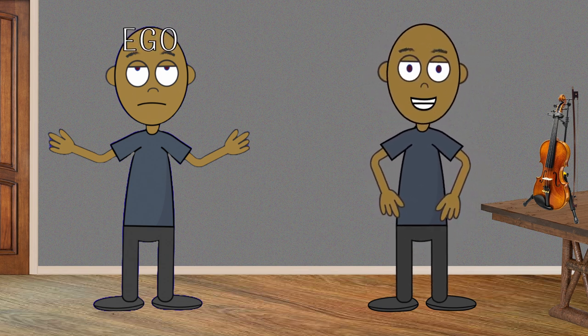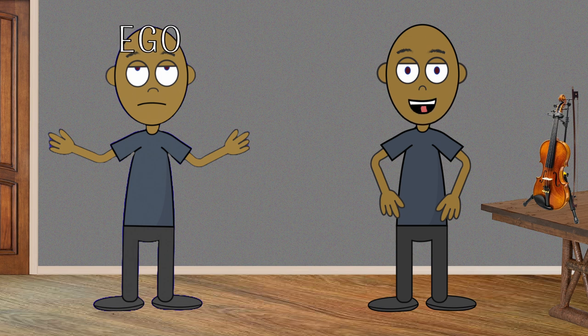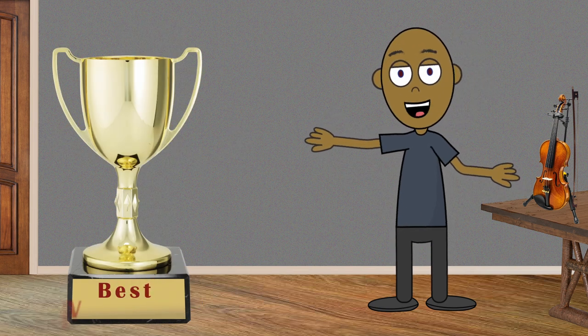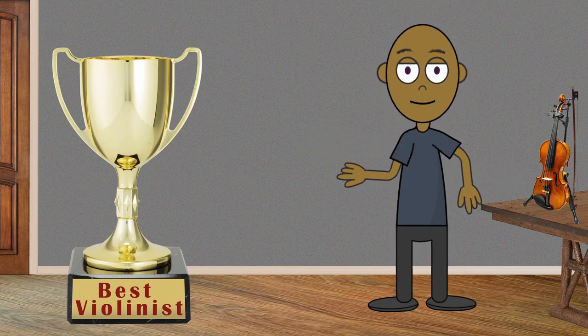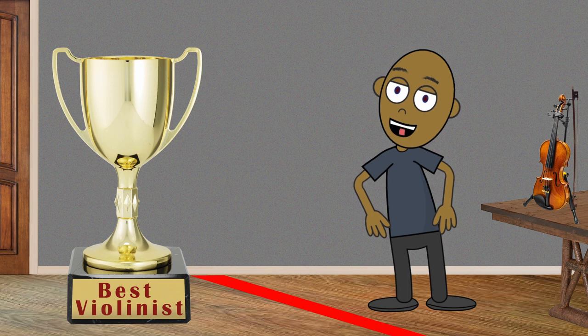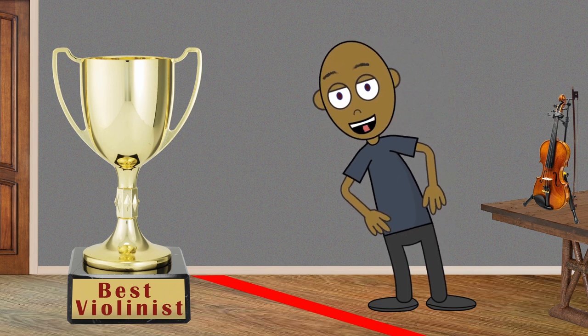That out-of-control ego could lead us to believe, for example, that we were the best violinist in the world. That happens. Does it mean we've crossed that line? The line where our ego makes us believe things that maybe aren't true?